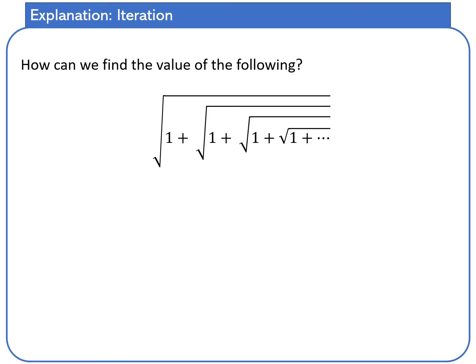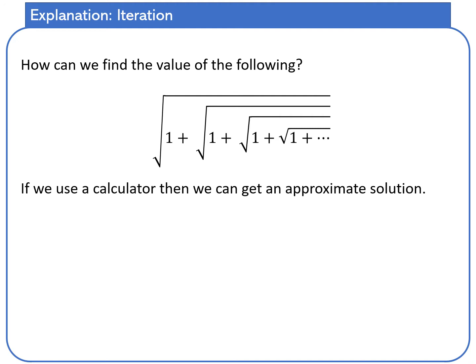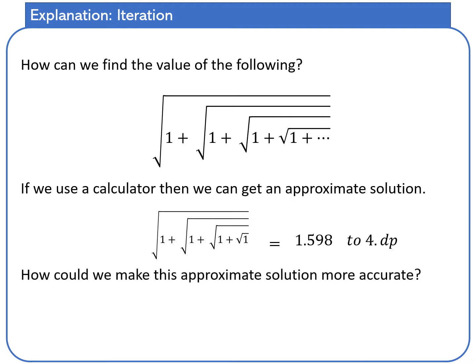How can we find the value of the following? We have the square root of 1 plus the square root of 1 plus, and that's going on forever. If we use a calculator, then we can get an approximate solution. Put four of those in and I get 1.598 out to four decimal places. How could we make this approximate solution more accurate? Let's see on the next slide.